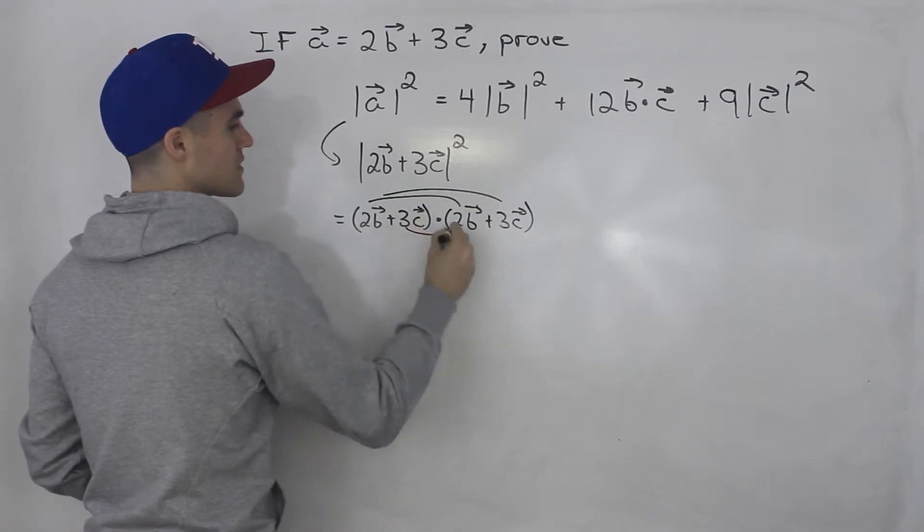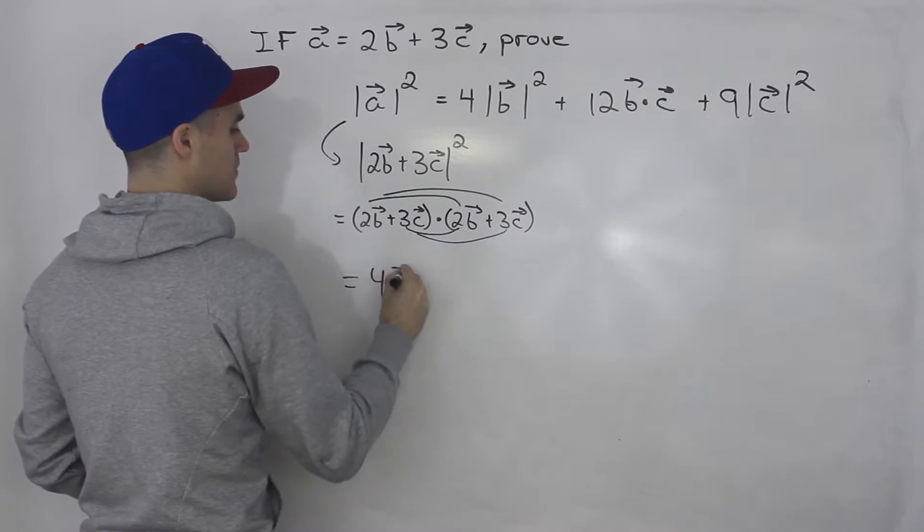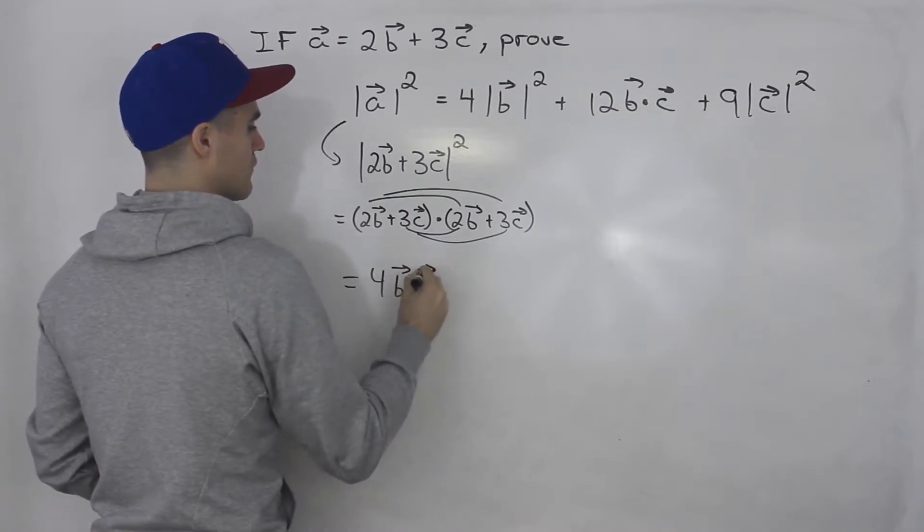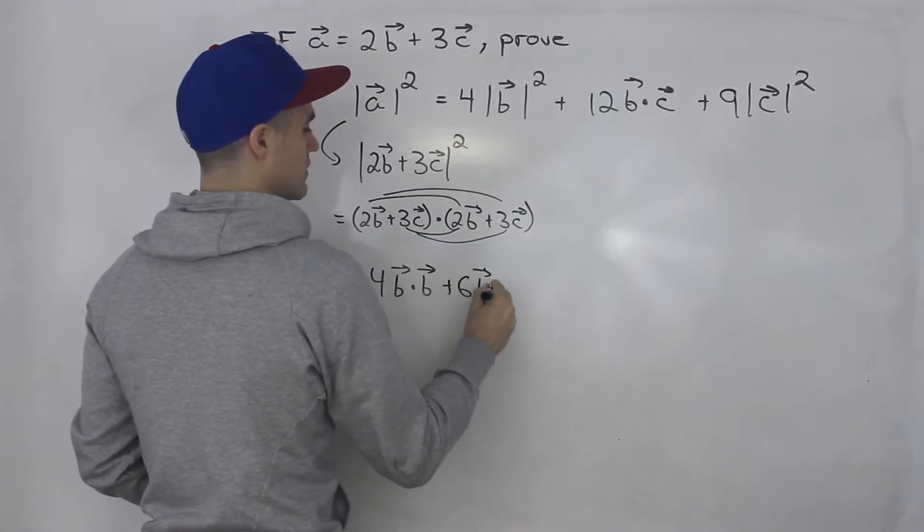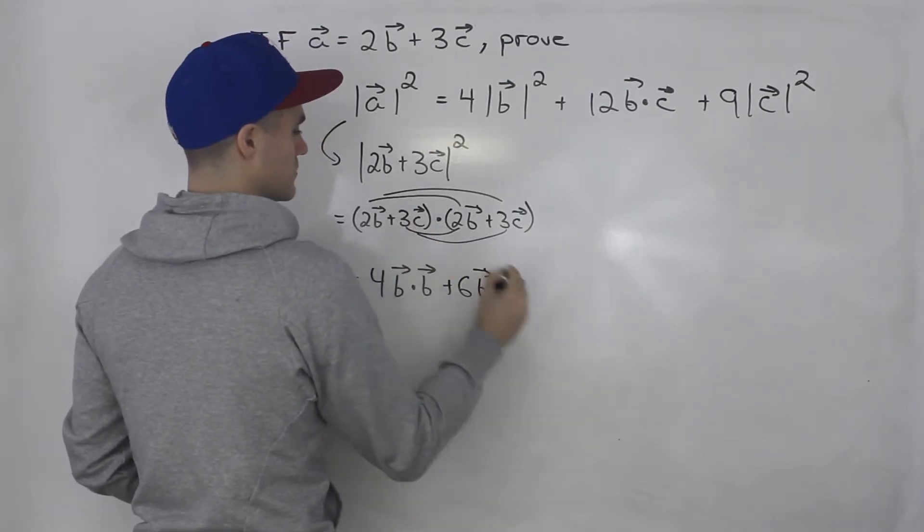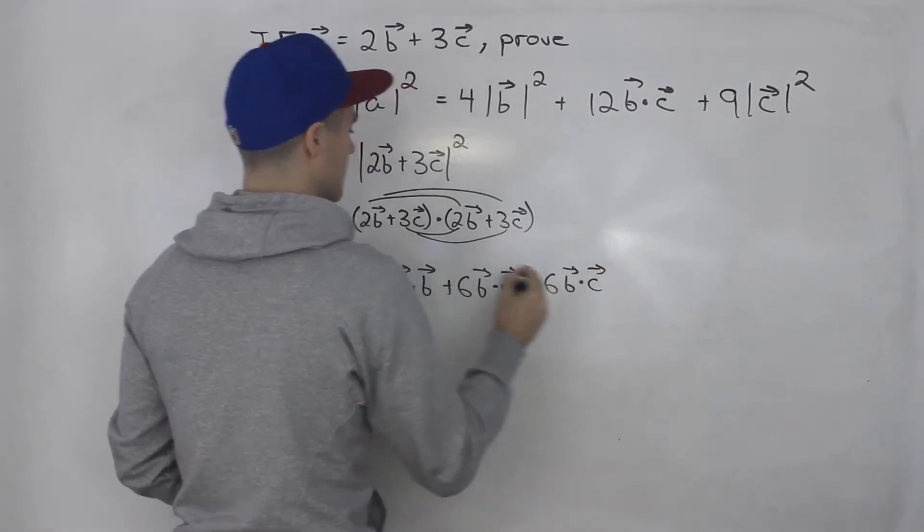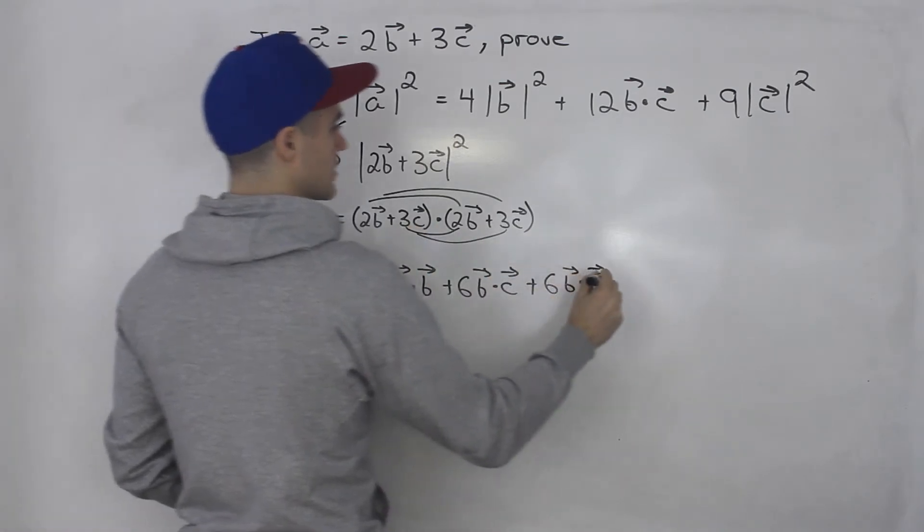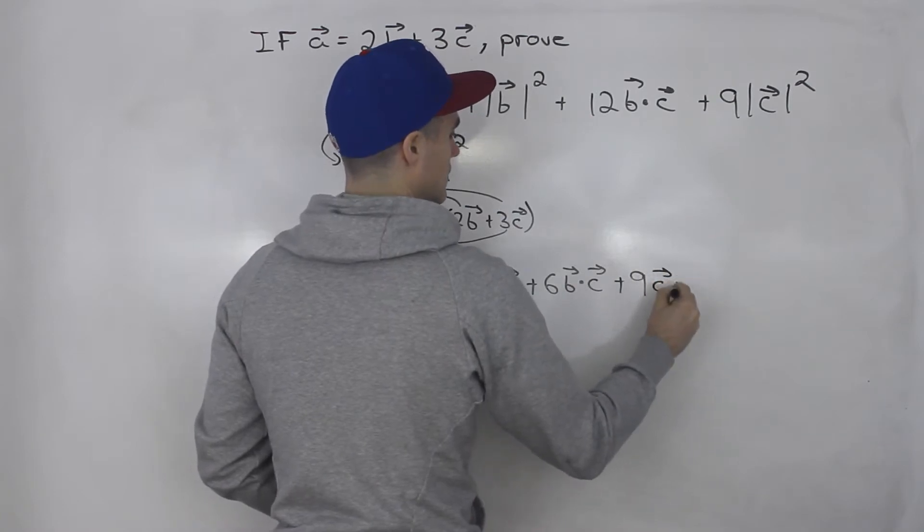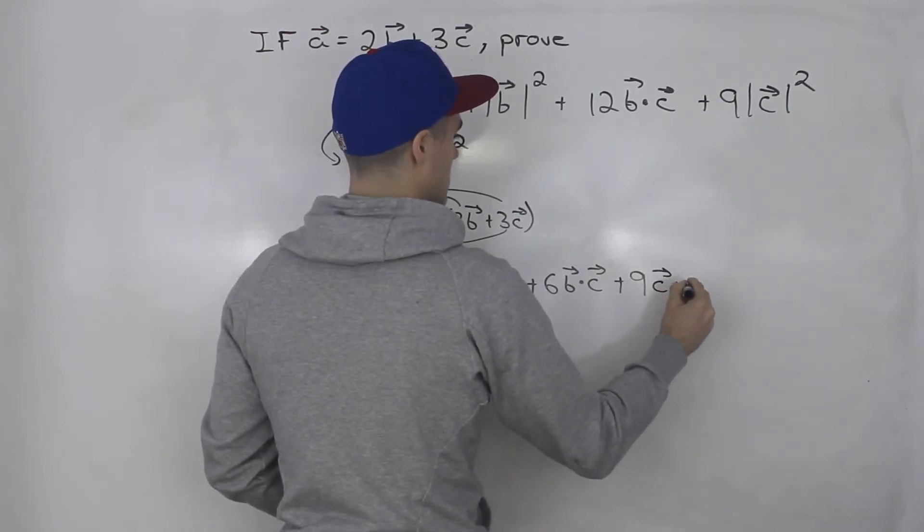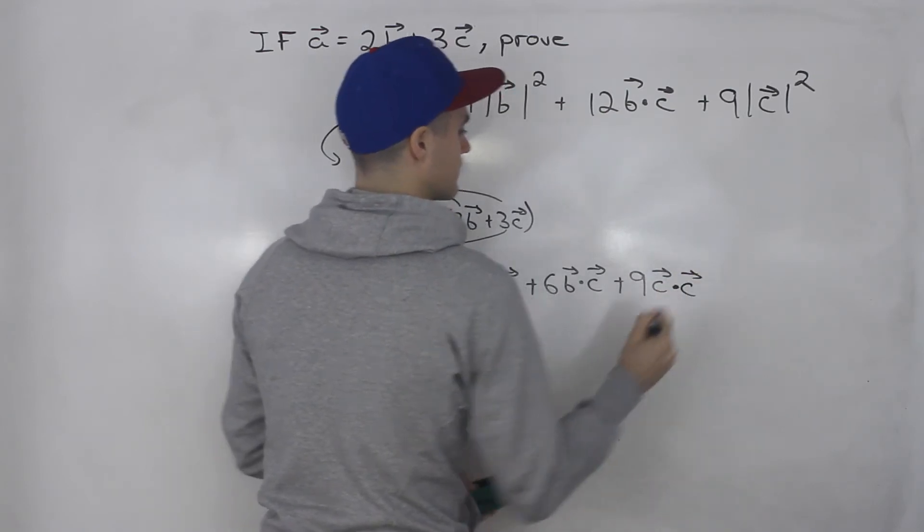Now we can foil this out. So 2 times 2 is 4, and then we got b dot vector b. 2 times 3, that is 6, and then we got b dot vector c. 2 times 3, that is 6, b dot vector c. And then 3 times 3 is 9, and that is c dot vector c.